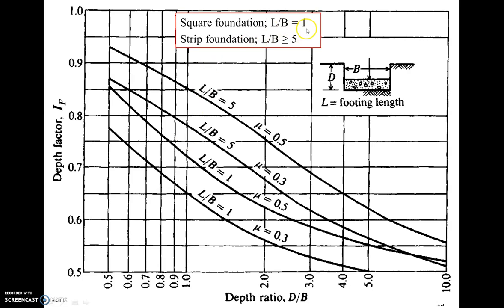For square foundations, L over B is considered as one, and for strip foundations L over B is greater than or equal to five. Anything in between would be estimated and we will be able to use that through interpolation.